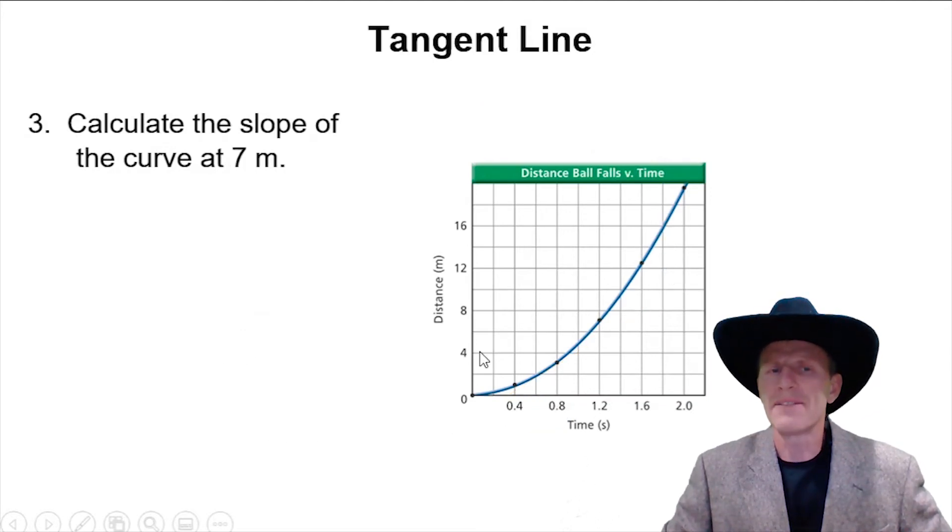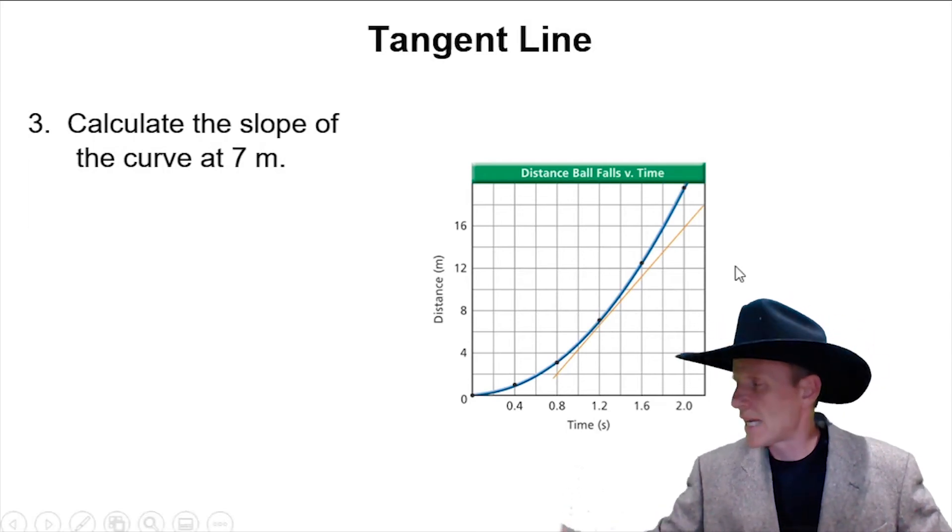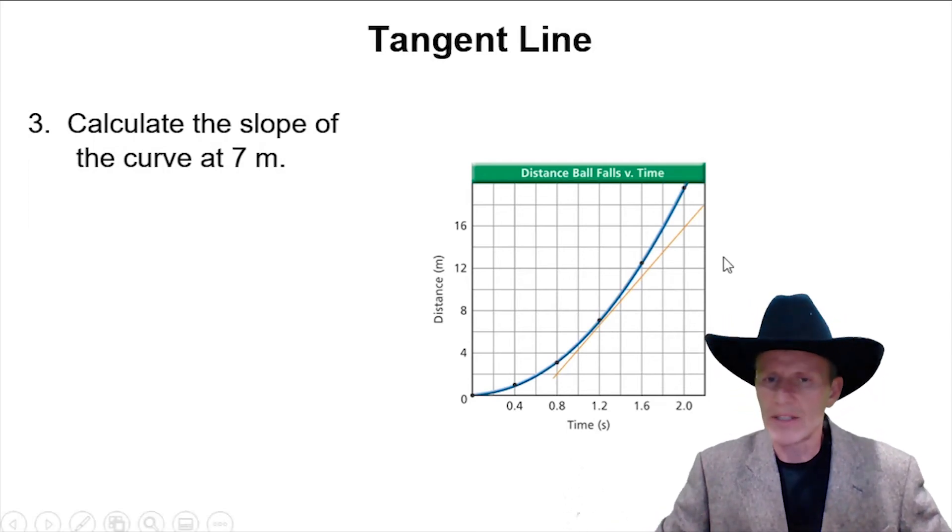What about 7 meters? It should be different. So at 7 meters, if we extended this line and drew a tangent, it would look like this. So again, that line right there is your tangent line. It's the best straight line approximation at that point.